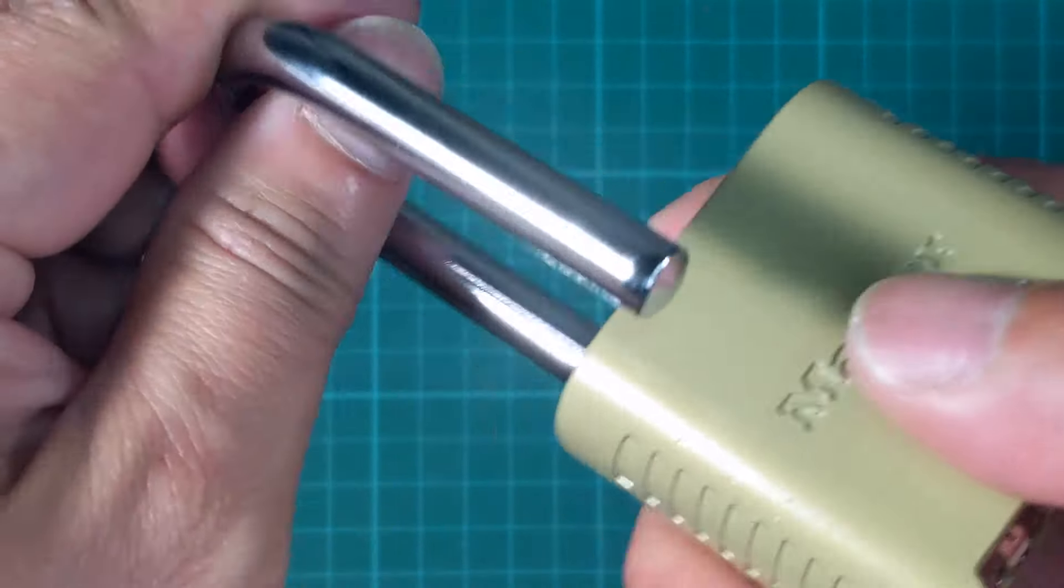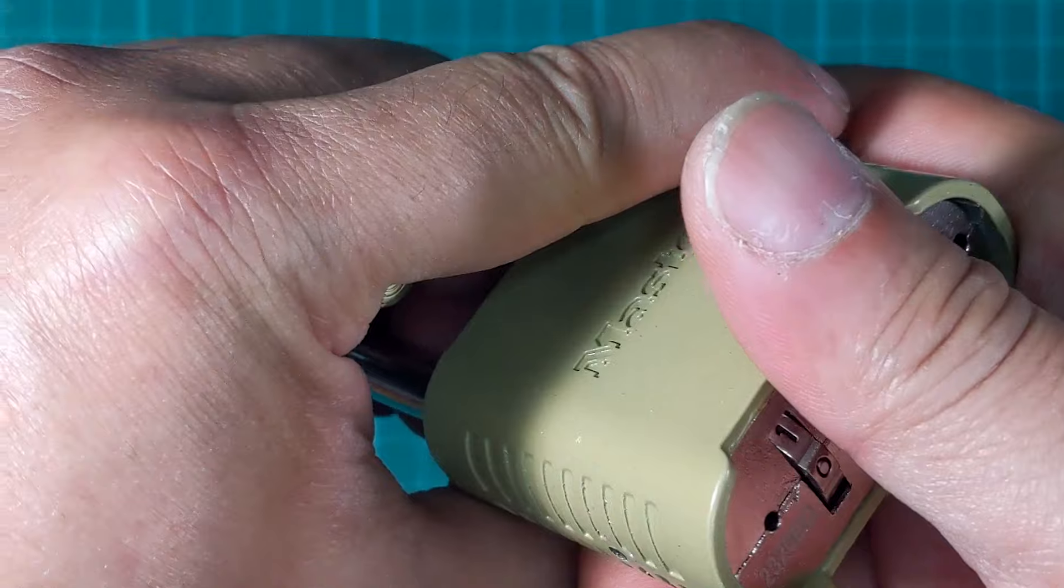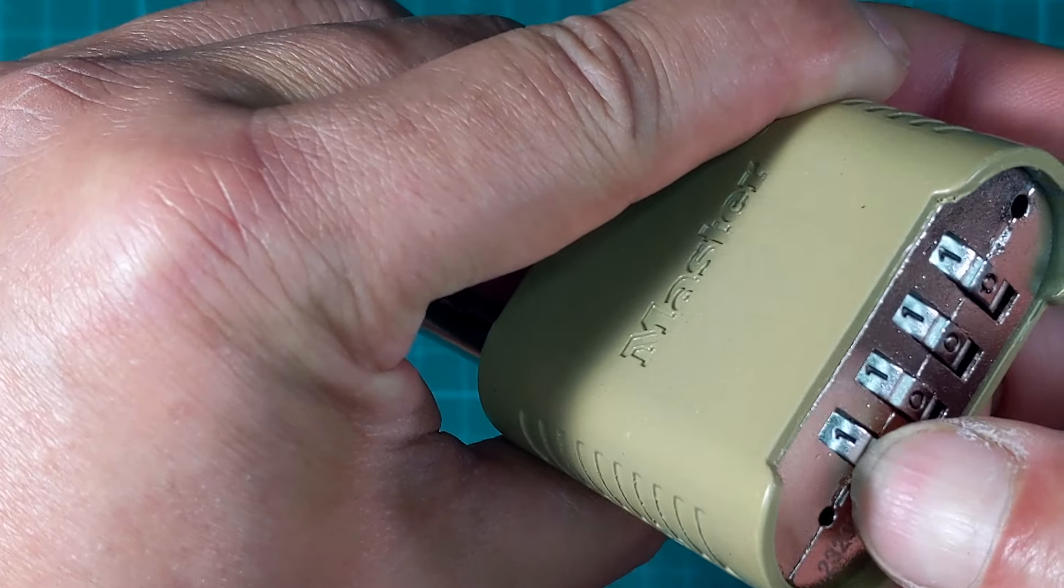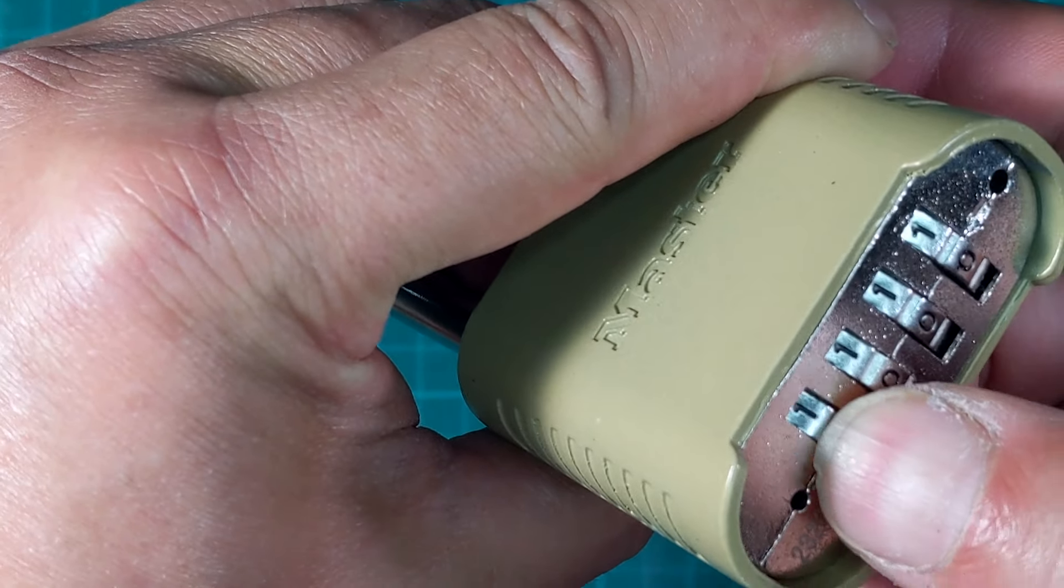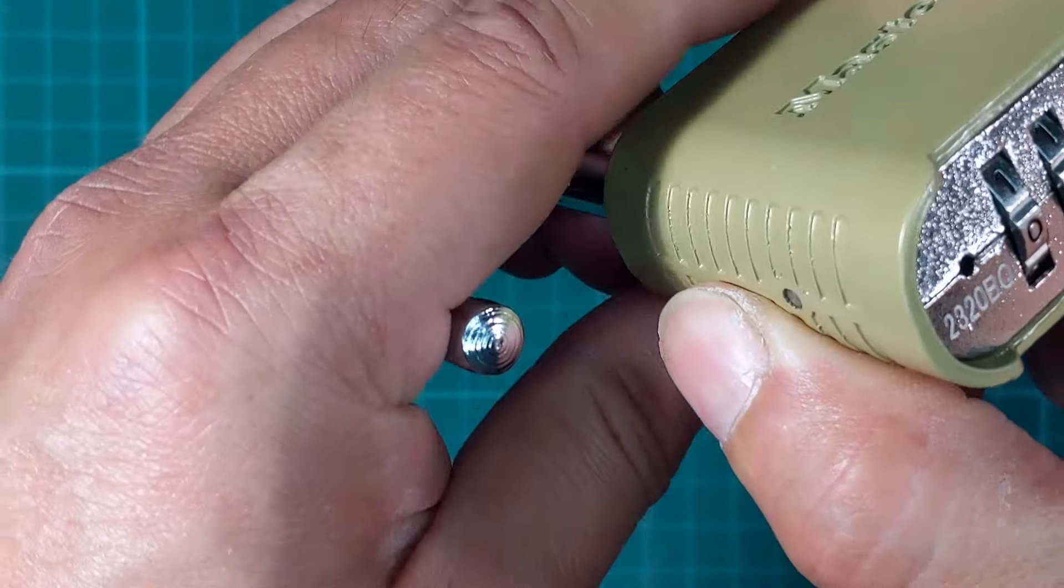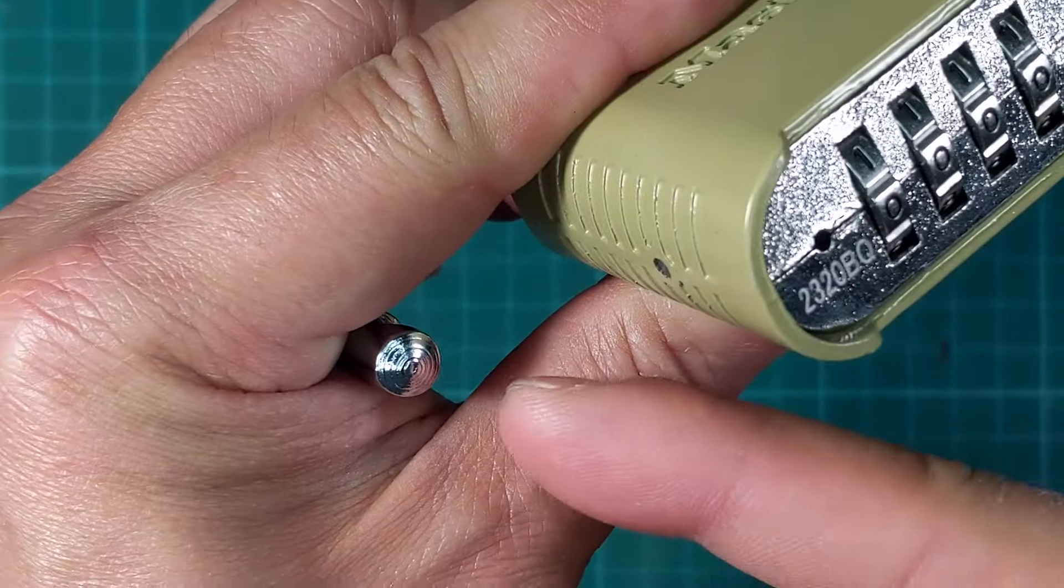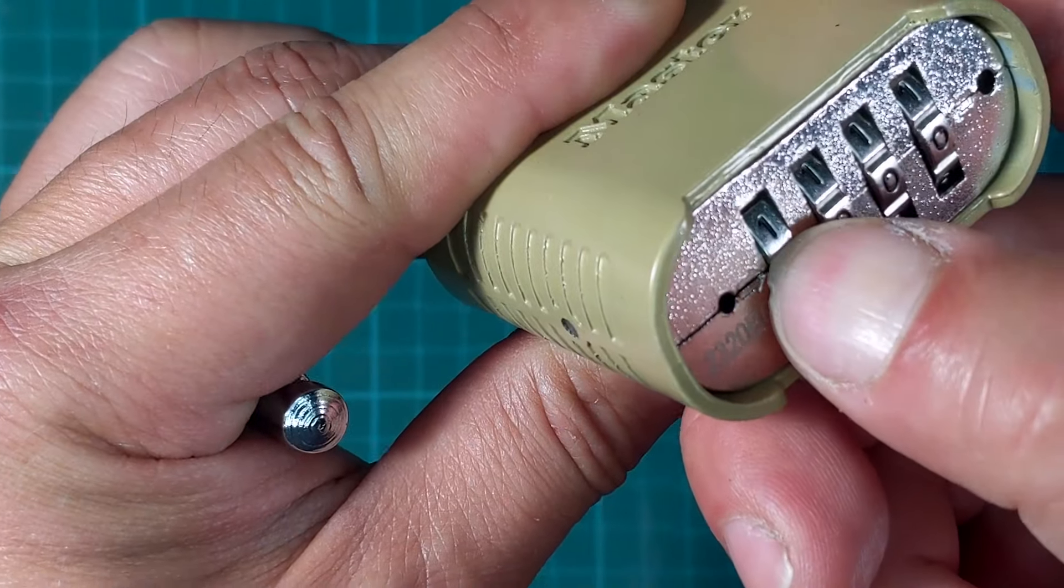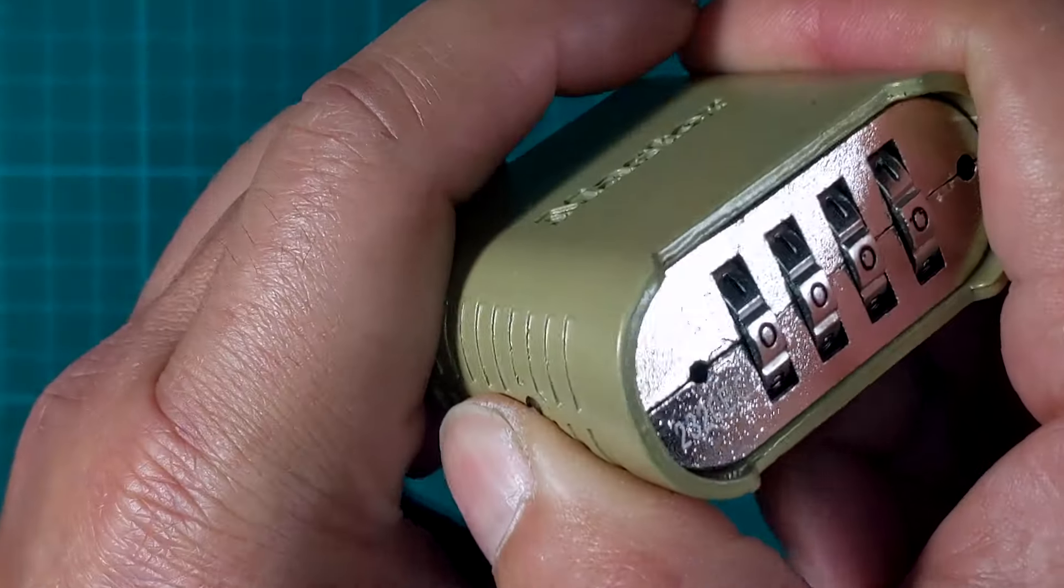Once you press it down, you're going to try to move the numbers. If it doesn't move, you're just going to rotate it. Right now it's 180 degrees right here and you're going to try to move it, and if it still doesn't move you're going to rotate it again.